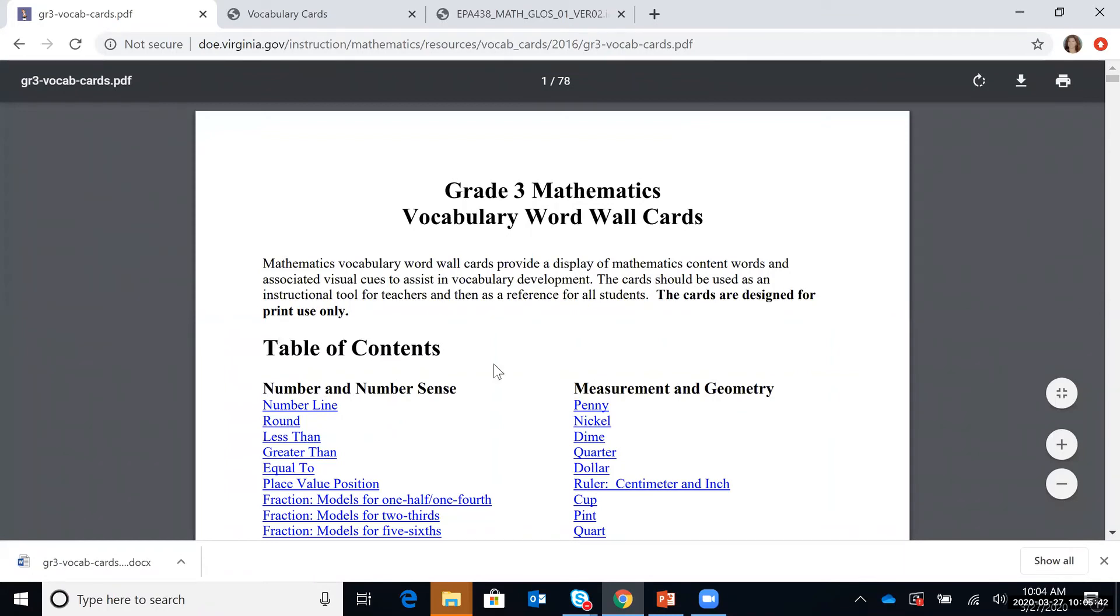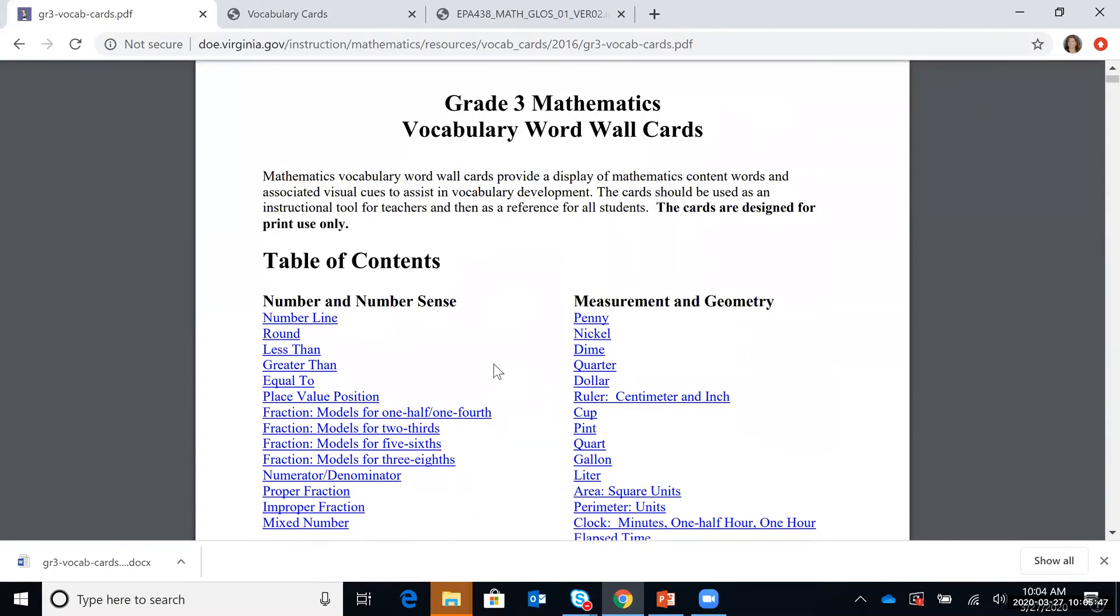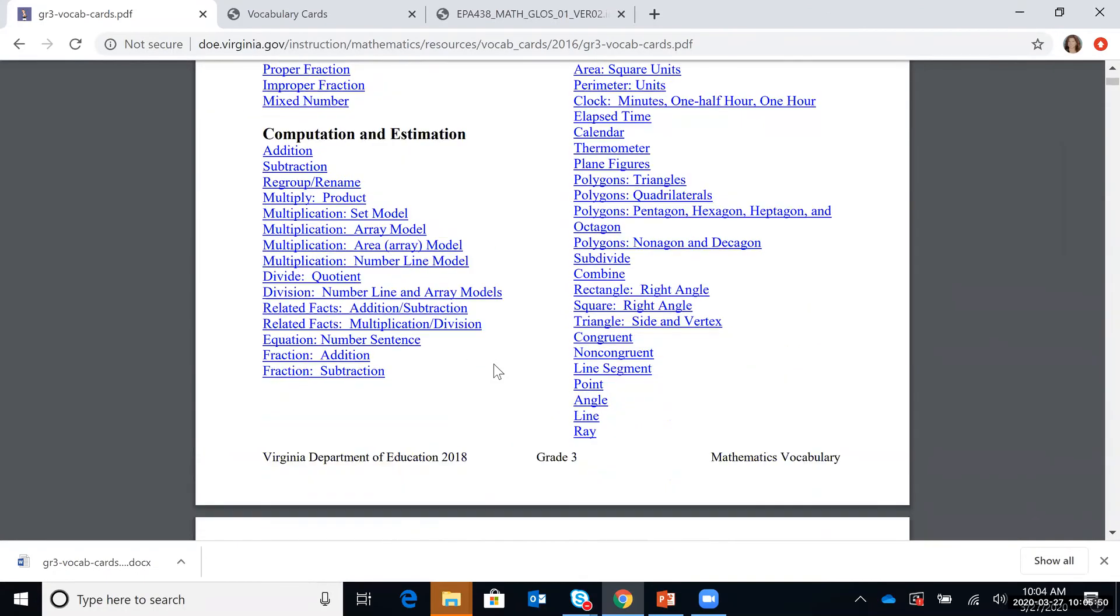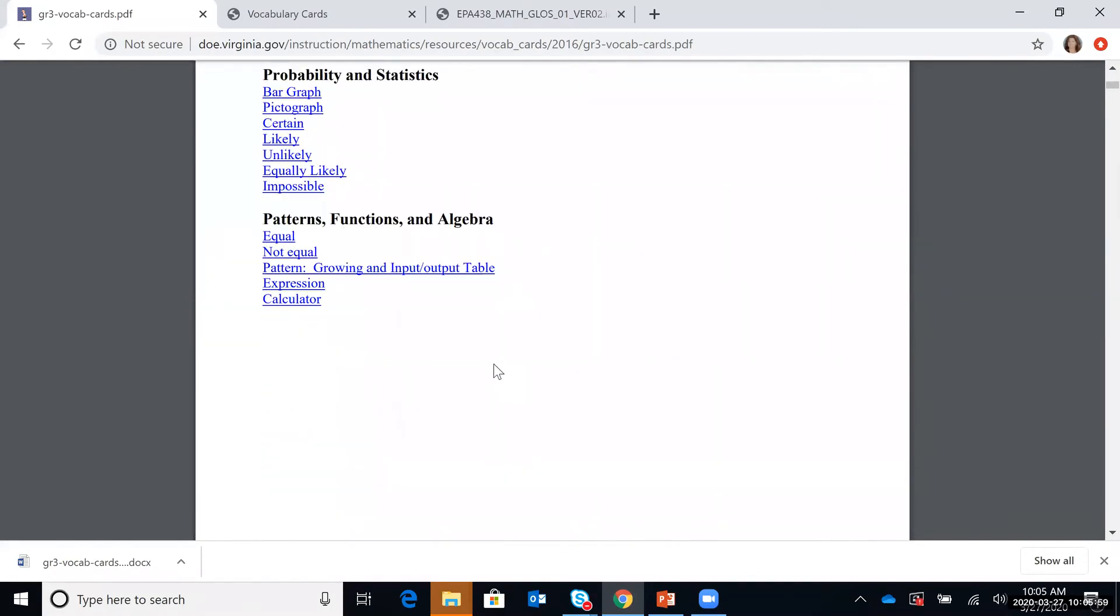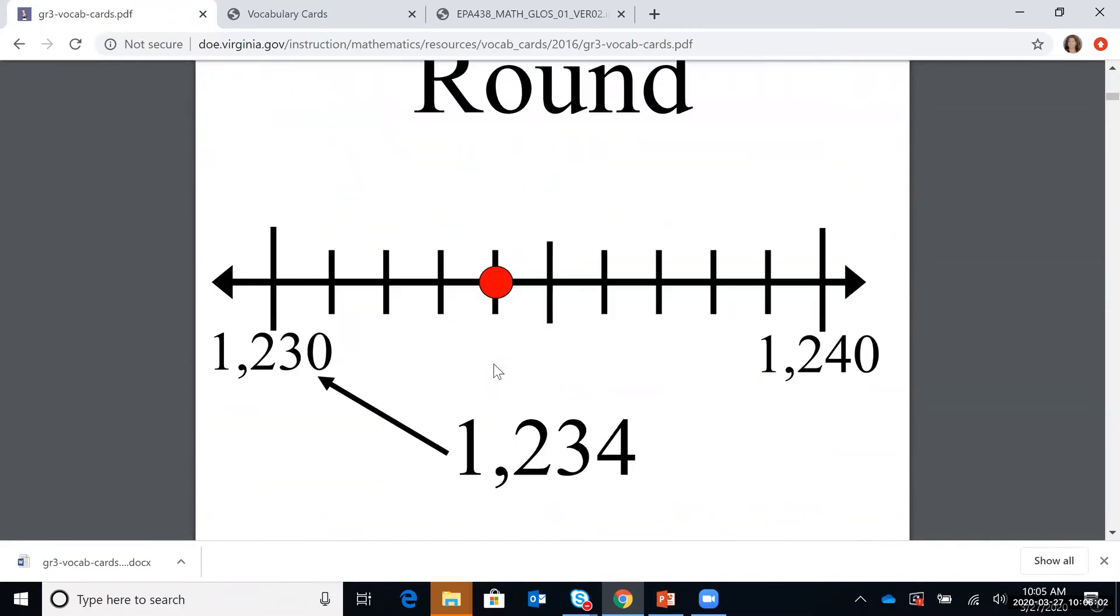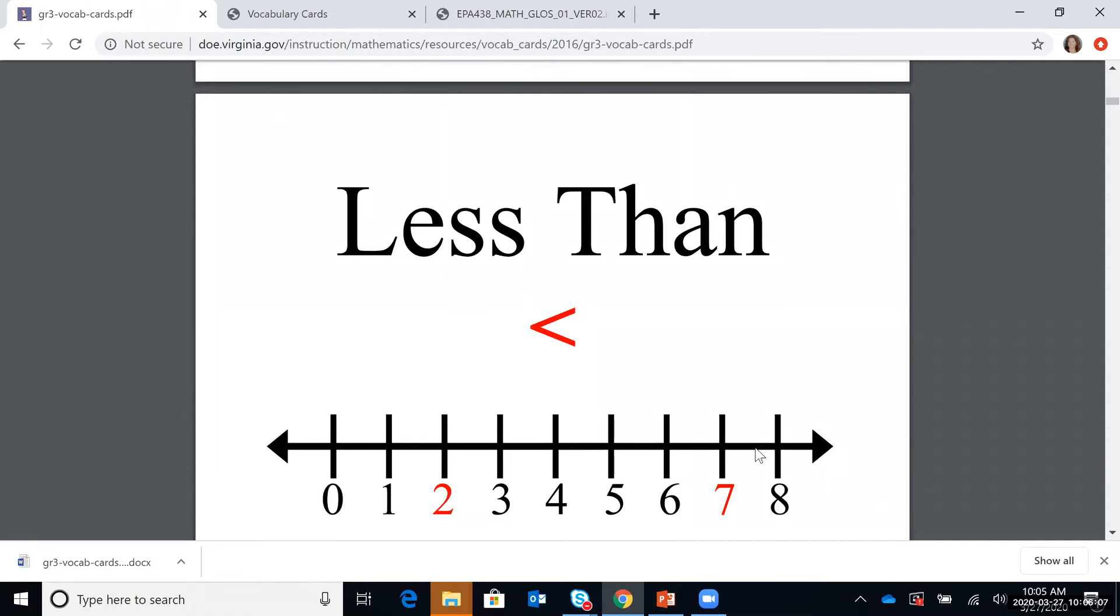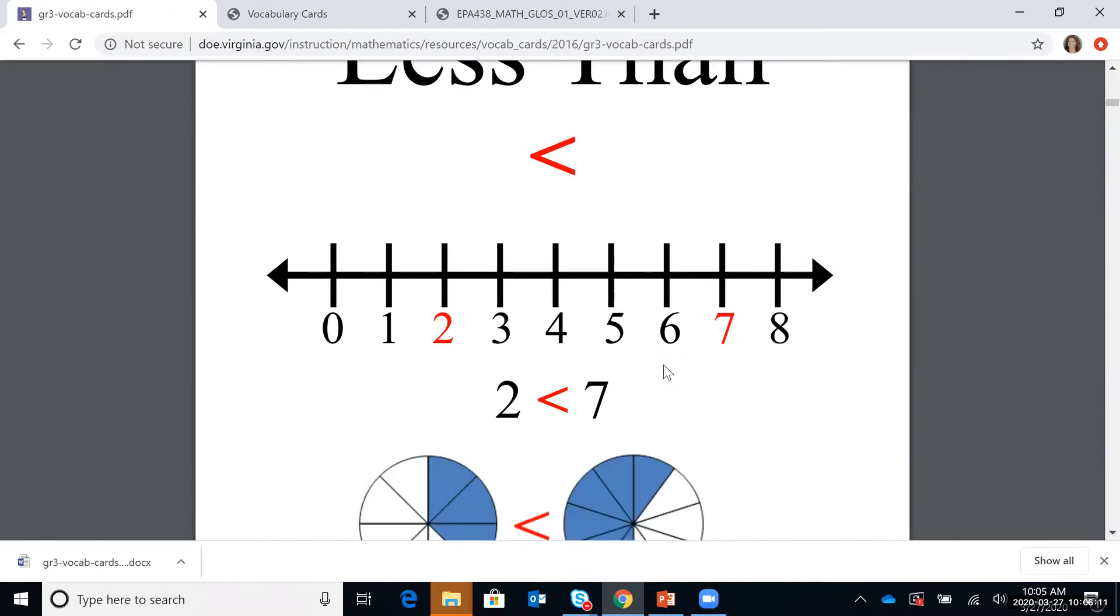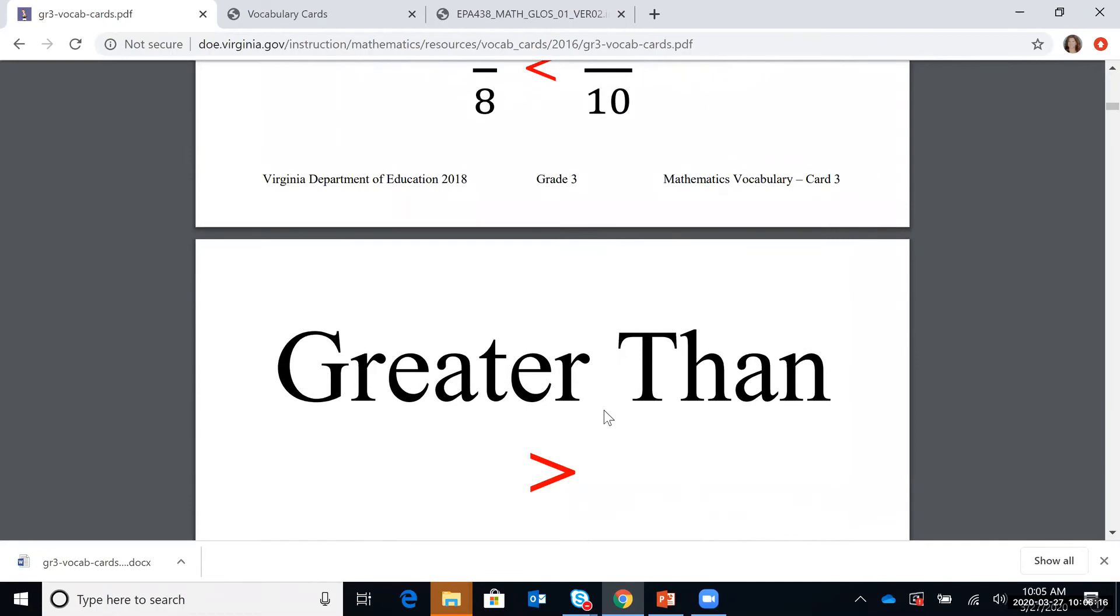So on each of these word wall cards, you can see the table of contents. So you can kind of do a quick scan and see what words do we really need to work on, what ones does it seem that my student or my child is having difficulty with. So you can look in the table of contents and then you can see as you go through, each one includes a pictorial representation of what that definition might look like. It has multiple ways to represent that. So this is one helpful website.